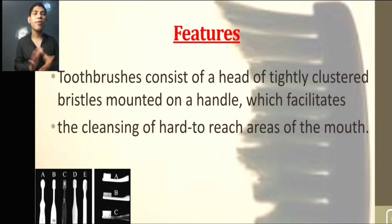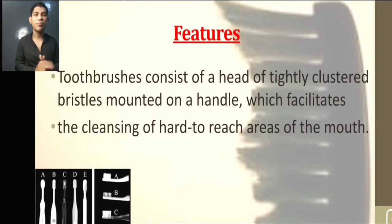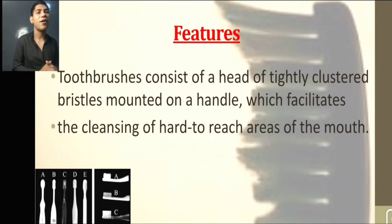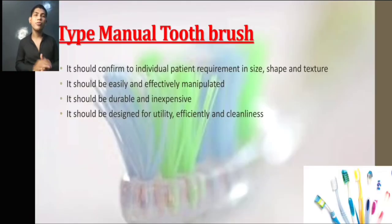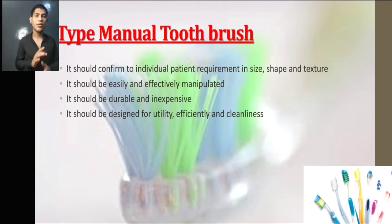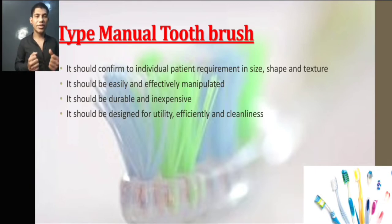The toothbrush is a device with tightly clustered bristles mounted on a handle, which facilitates cleaning the hard-to-reach areas of the mouth. There are different types of manual toothbrushes — they have different sizes, different shapes, different quality, and different extension power.